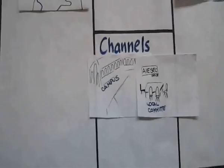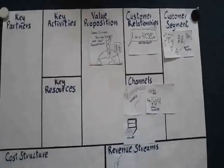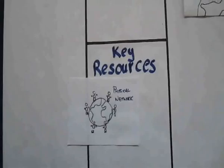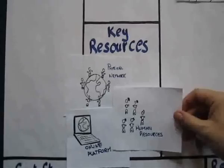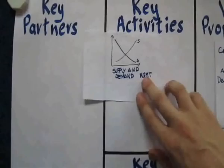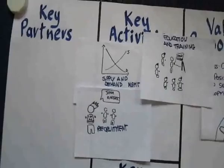We market and deliver this value through our university campuses, in our local committees, and online. The key resources we need to deliver the Global Community Development Program are our physical network of local committees, our online platform myiSEC.net to manage the program, and a delivery force of people. The key activities iSEC must perform include supply and demand management, recruitment, education and training, as well as logistics and reception.